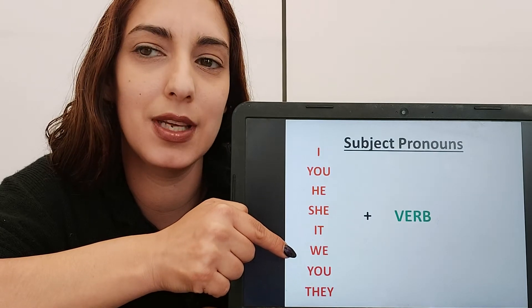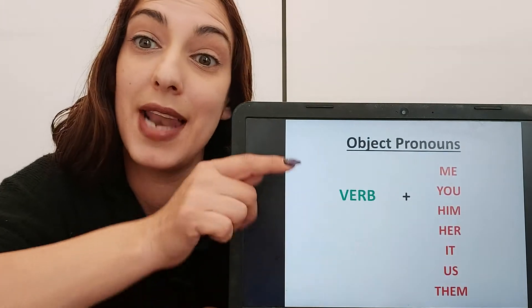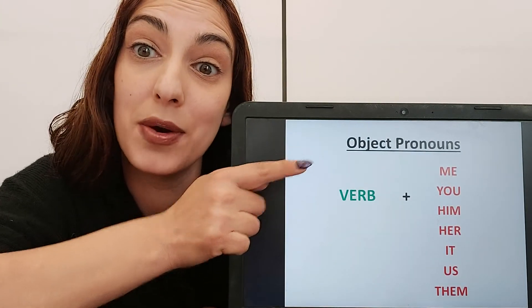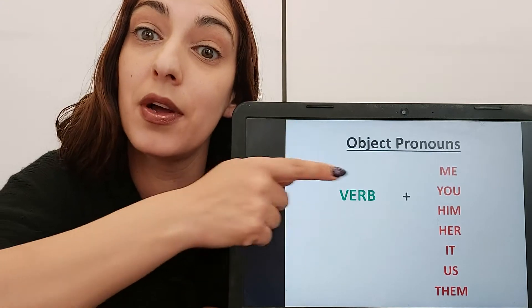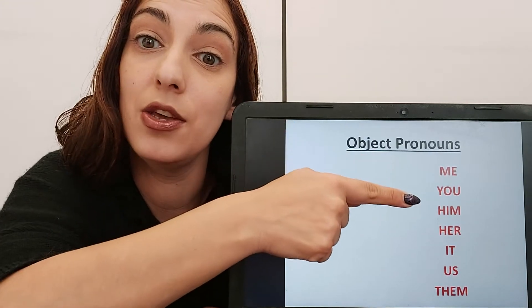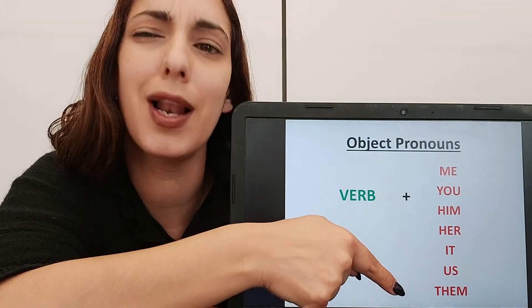Let's have a look and see the other ones. Now, object pronouns always come after a verb: me, you, him, her, it, us, them.